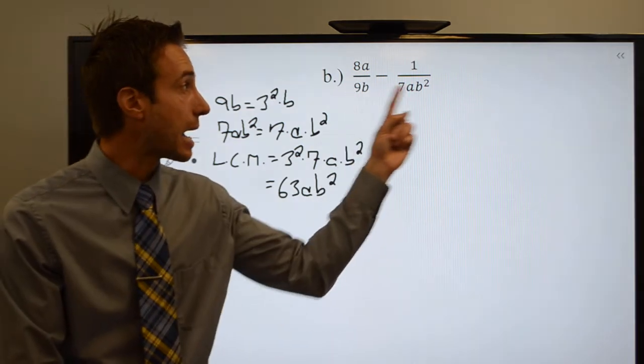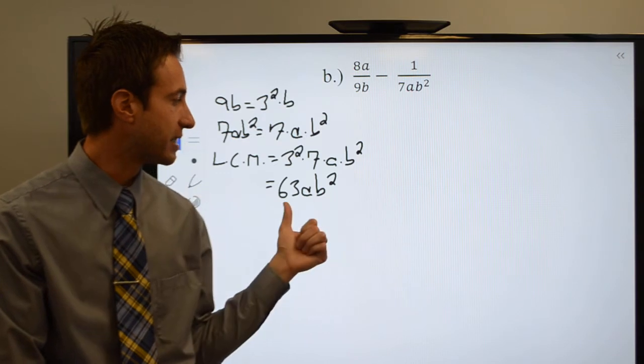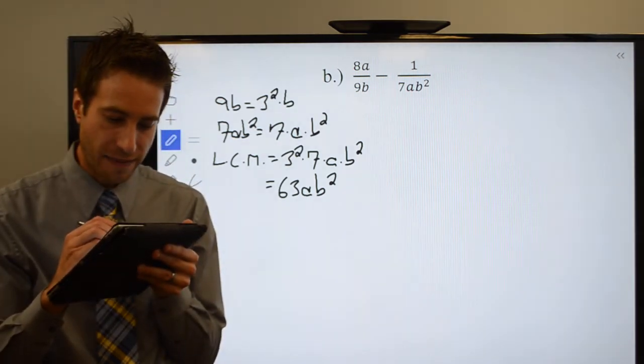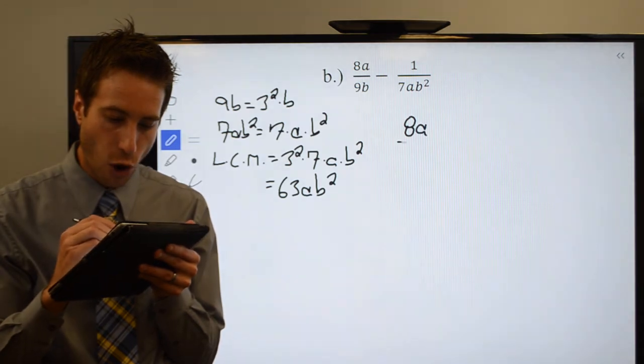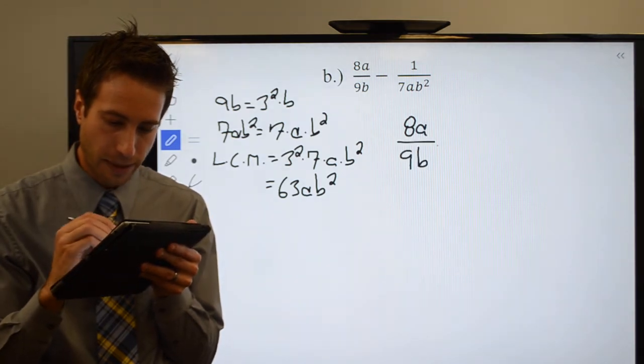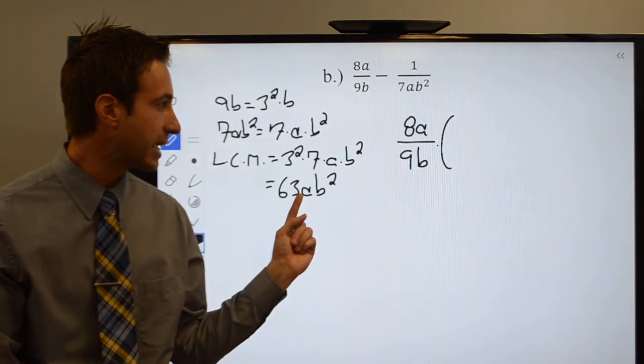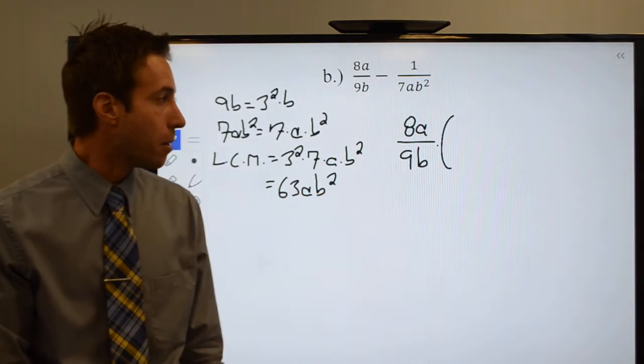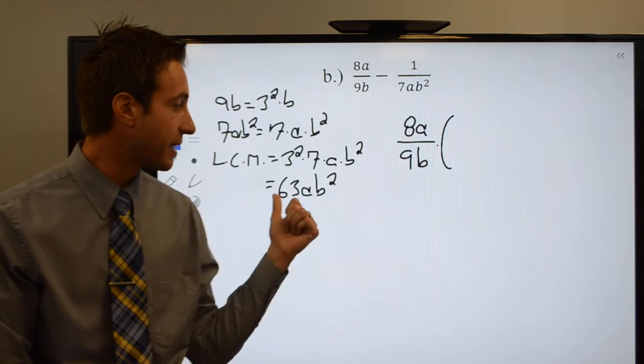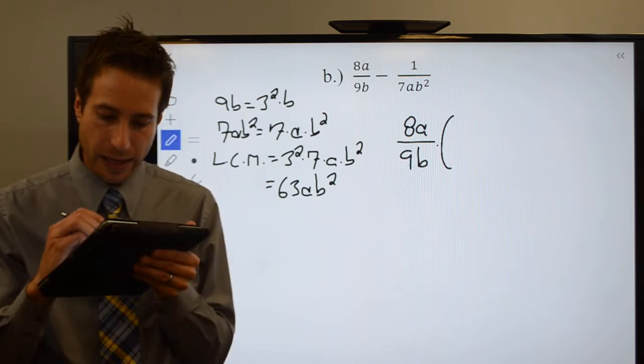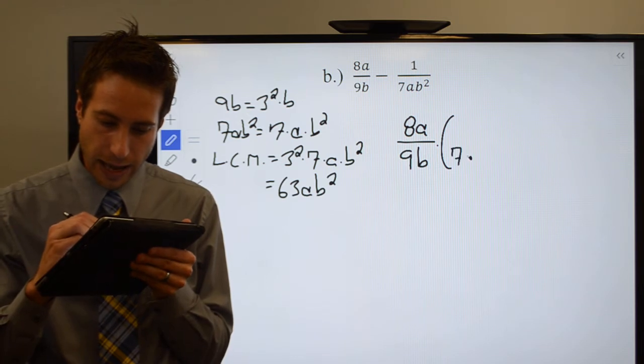So that means I need my denominators to be 63AB squared. Well let's figure out how we do that. I have 8A over 9B. Alright, well how do I get 9B to be 63AB squared? Well multiply, right, 9 times 7 gets me 63. I need an A and I need another B, so 7AB.